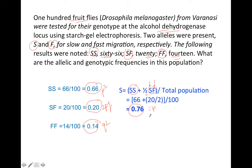Similarly, we will find the frequency of another allele which is F. So what would be F? FF plus half of SF, because half of it is S and half of it is F, divided by total population.